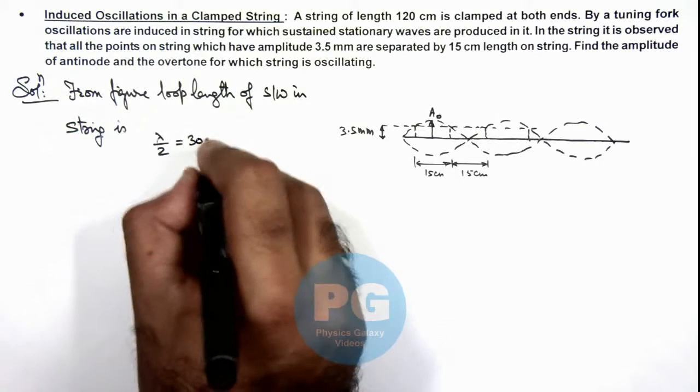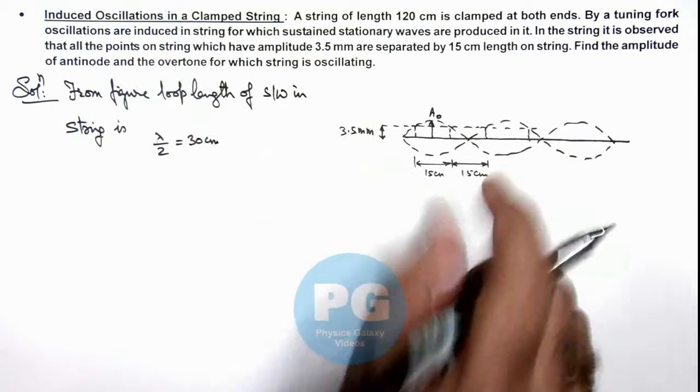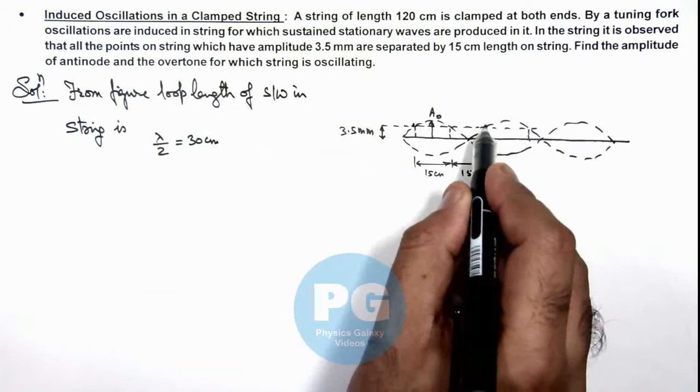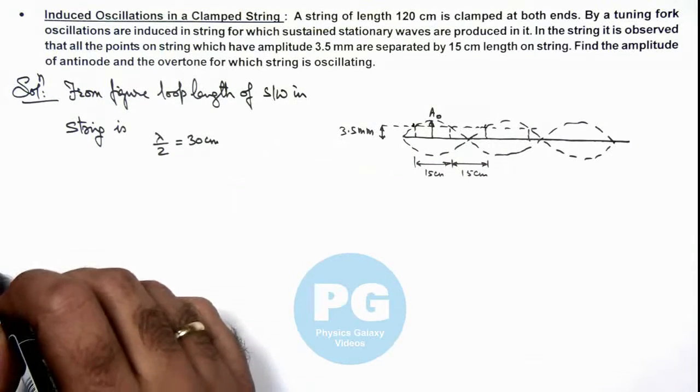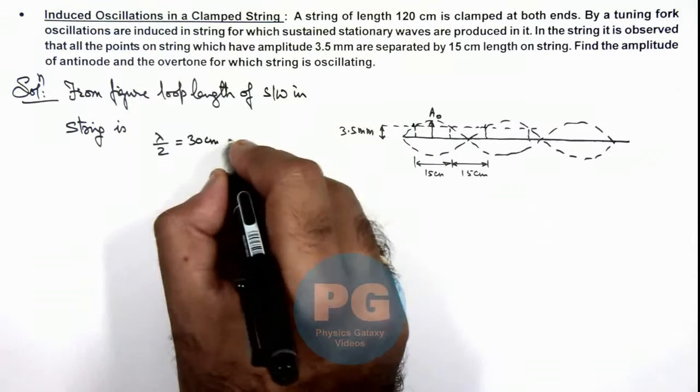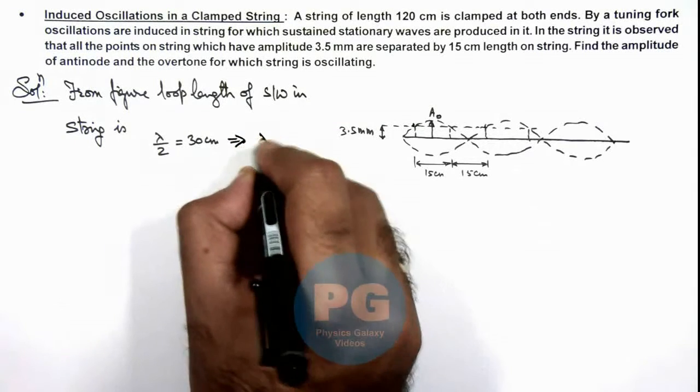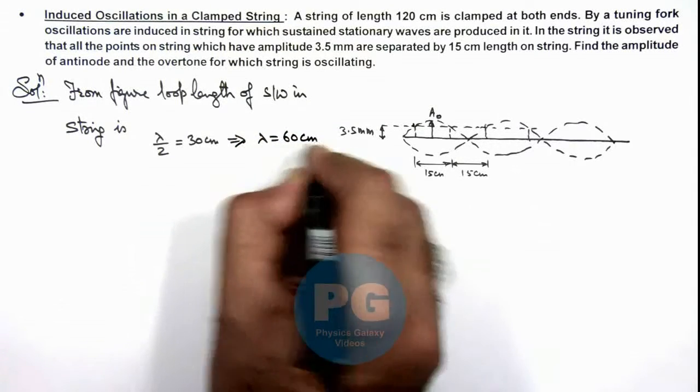As this total length will be λ/2 from one point to another point in the second loop or adjoining loop, which gives us the value of wavelength of stationary waves as 60 centimeters.